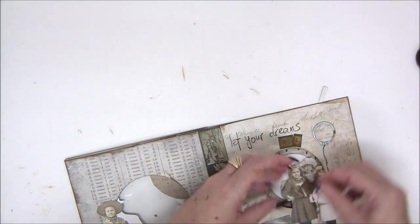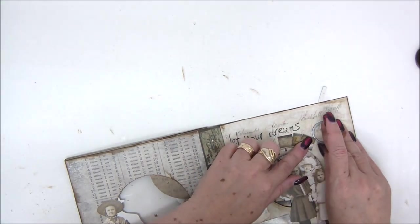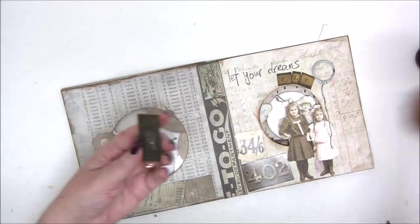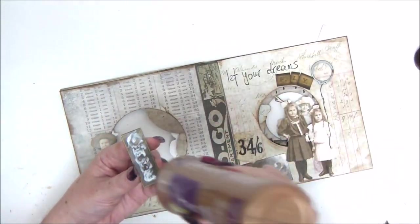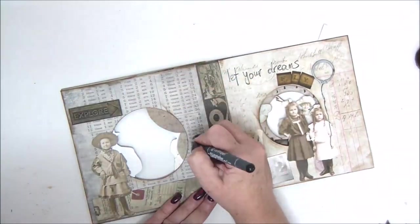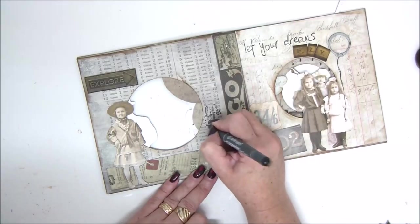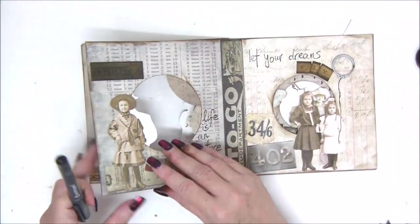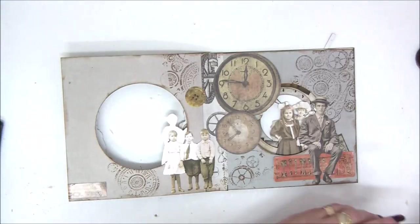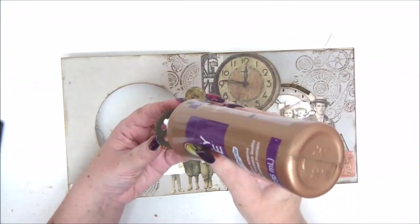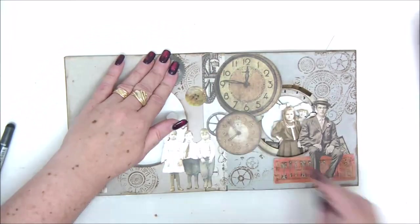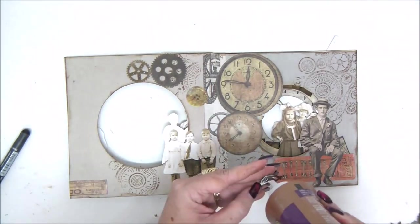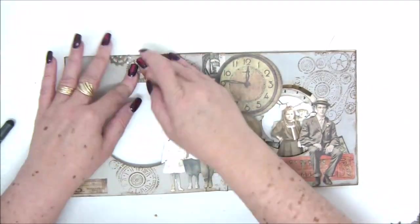I'm going with more metal embellishments. Just use your pen to add details or text or quotes or doodling or drawing, whatever you feel comfortable with. Let your dreams fly. I'm mixing—the text is a mixture with handwriting and stickers, so it makes it a little bit more interesting. Life is an adventure, and then it says explore on that metal piece there. This page is busy enough, so I'm just going to add something to the left side here, a little bit of a metal cog.